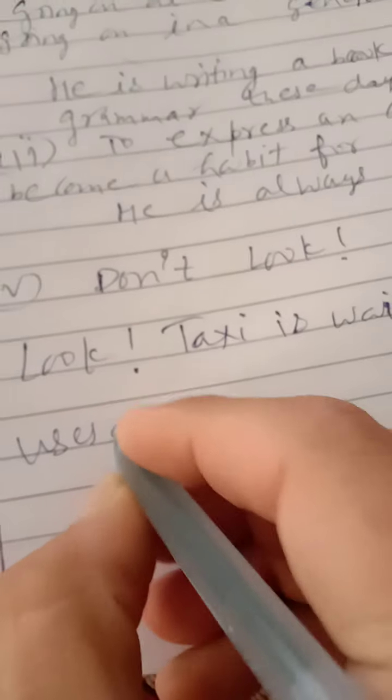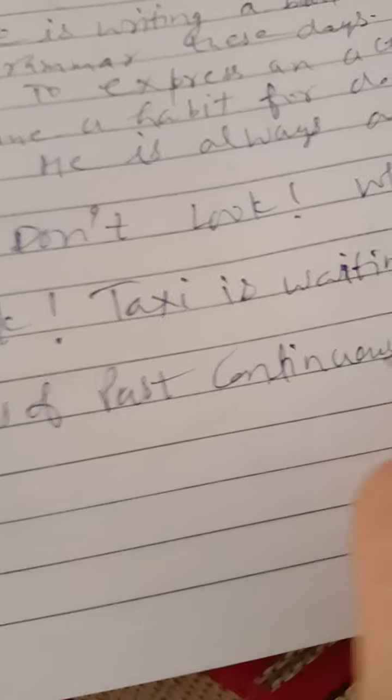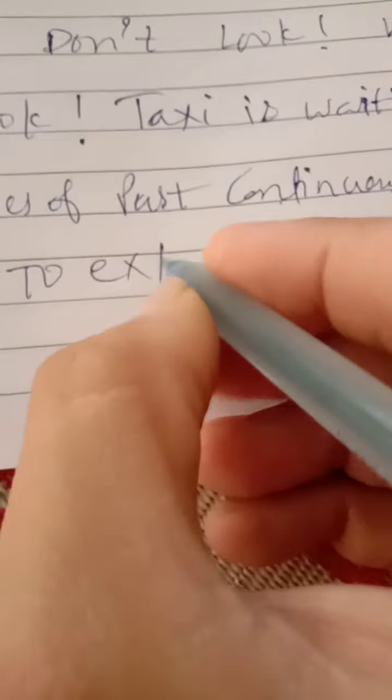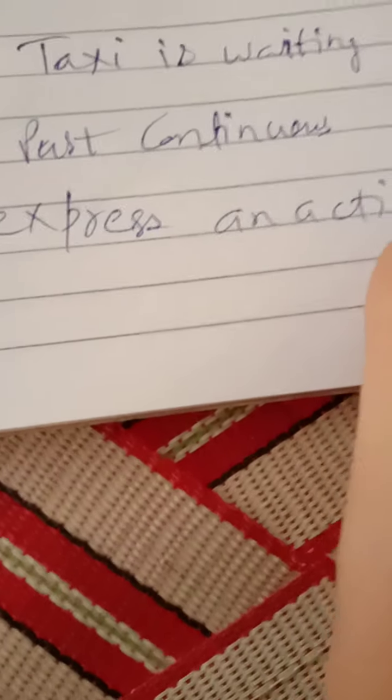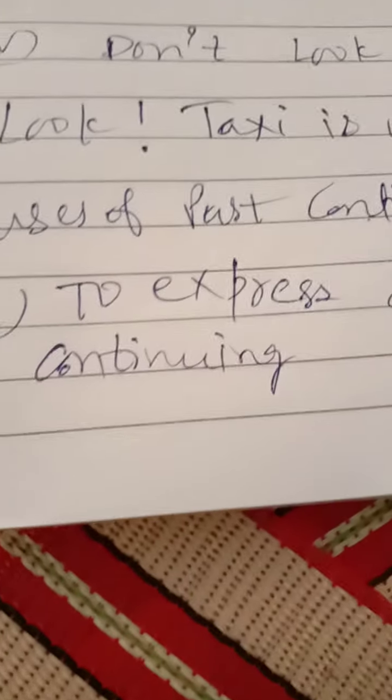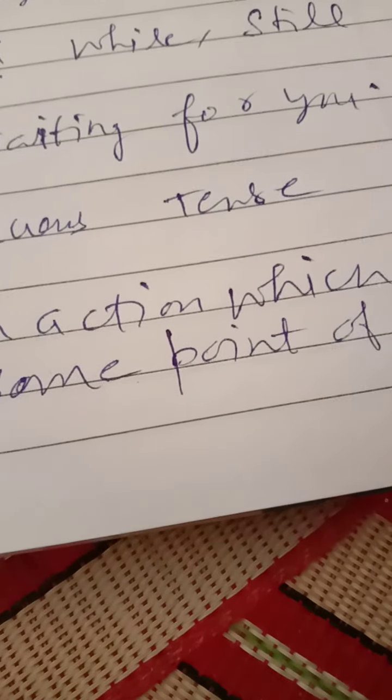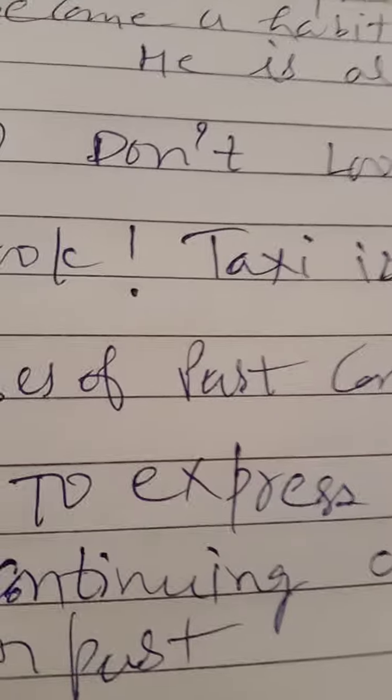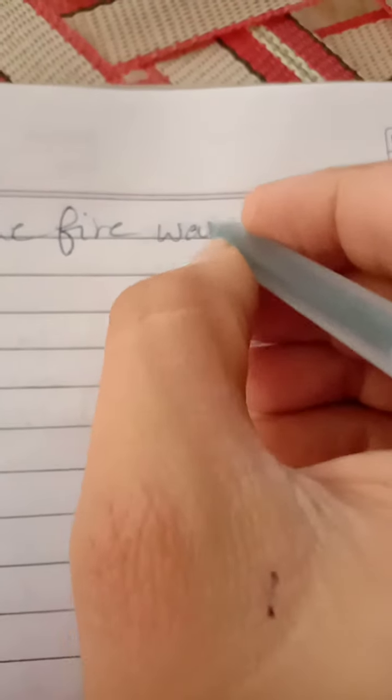Now, uses of past continuous tense. First point: to express an action which was continuing at some point of time in past. अब एक्जाम्पल देखे इसका. The fire was burning